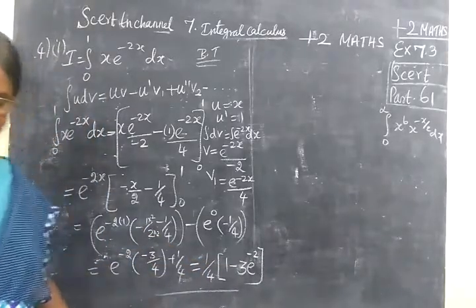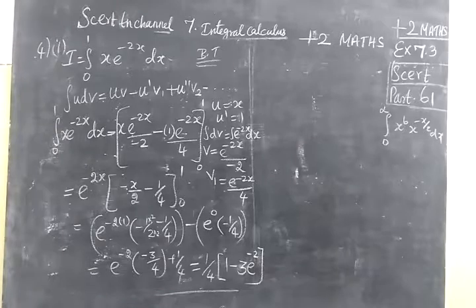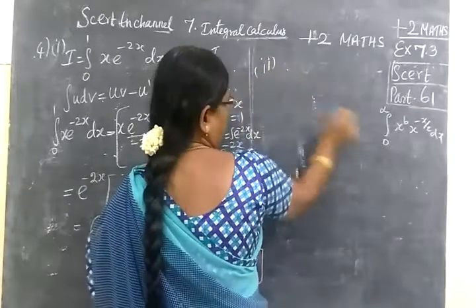Now we check the answer for that. So 1 by 4, 1 minus 3 e power minus 2. Now next we are doing the second problem.